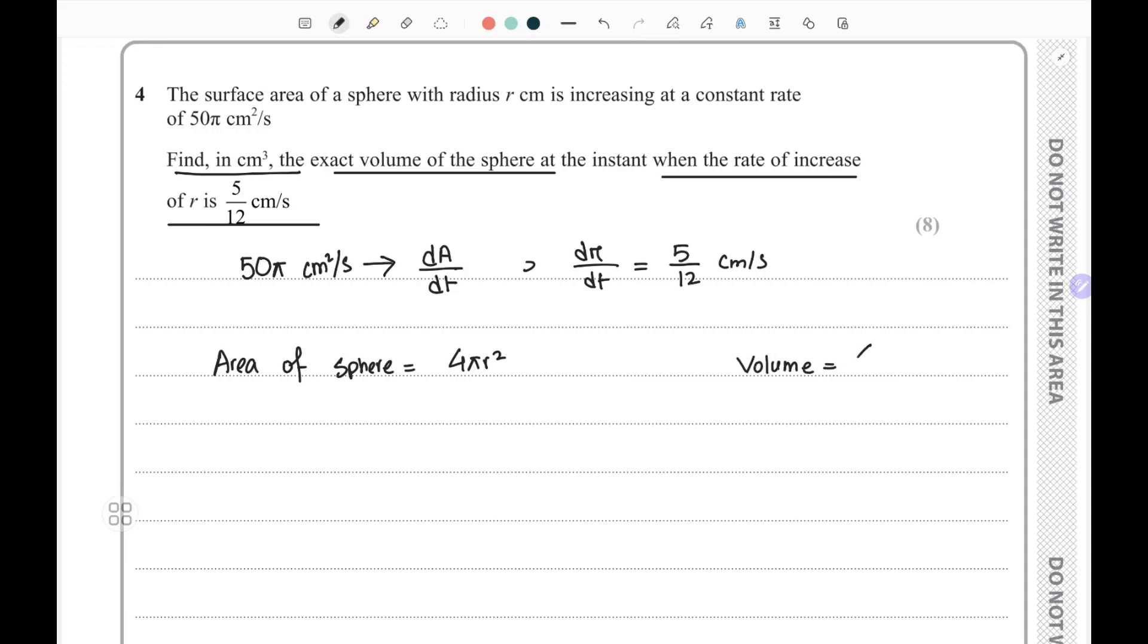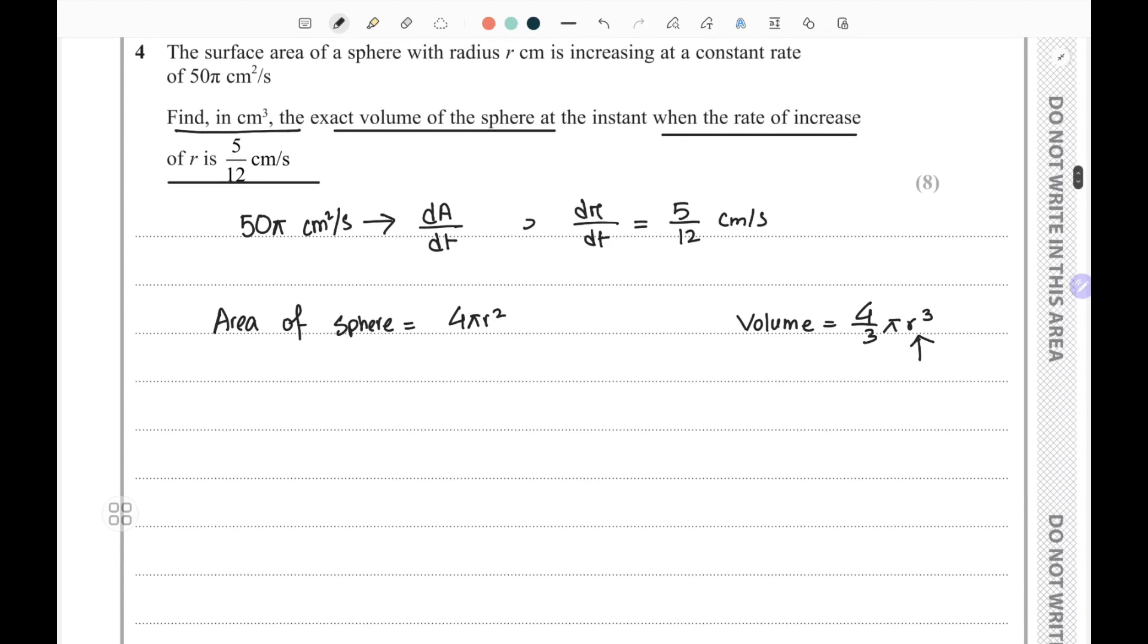We don't know the value of radius here to find the exact volume, so we need to find the radius for this formula to work. Here I have area of sphere given as 4πr², so if I differentiate this with respect to radius, it becomes 8πr.